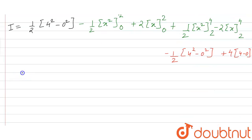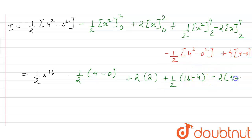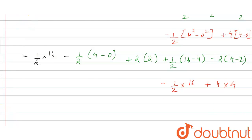On solving: 1/2 into 16, minus of 1/2 times (2 squared minus 0), plus 2 times (2 minus 0), plus 1/2 times (4 squared minus 2 squared), minus 2 times (4 minus 2), and from the last term 1/2 times (4 squared minus 0) equals 1/2 into 16, and plus 4 times 4.